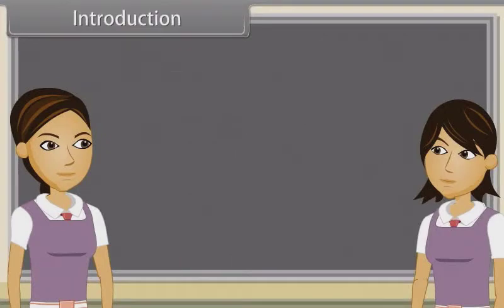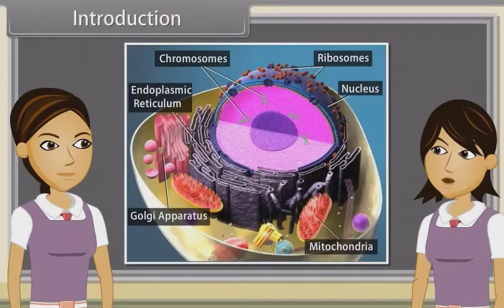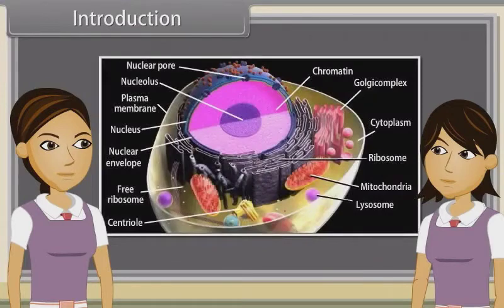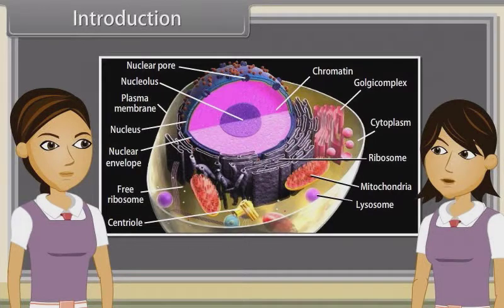We have discussed the structure of eukaryotic cells and the structure and functions of cell membrane and cell wall already. Now we will discuss the structure of endomembrane systems. We will also observe the structure of endoplasmic reticulum, Golgi apparatus, lysosomes, vacuoles, mitochondria, plastids, and ribosomes.